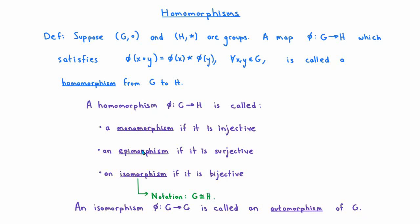This definition of isomorphism agrees with the definition we originally gave: two groups are isomorphic if and only if there's a bijective map between them which preserves their multiplication tables. That earlier definition is a little difficult to work with, but with this definition it's much easier to check whether a map phi is an isomorphism. Finally, if I have an isomorphism phi from a group G to itself, I may refer to it as an automorphism of G. The most important terms to remember are homomorphism, isomorphism, and automorphism.